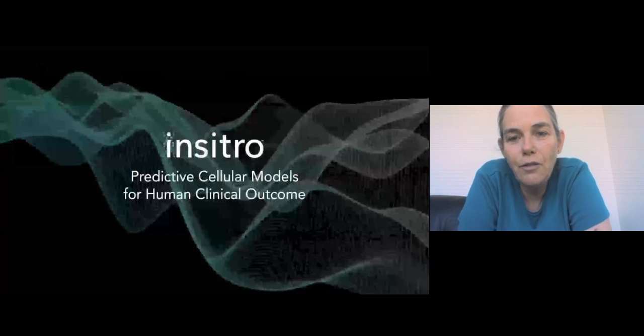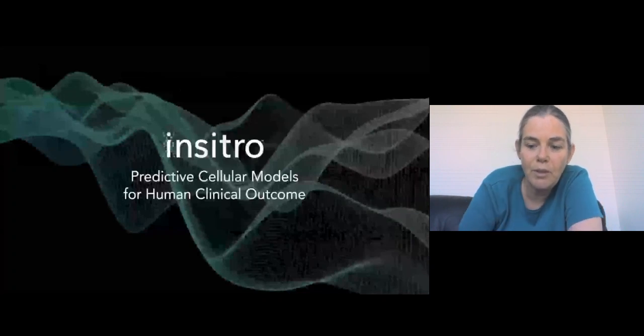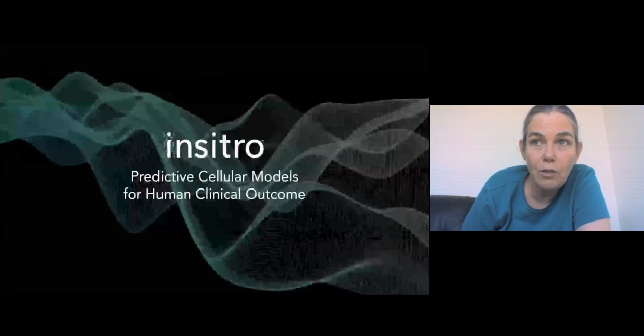So that was the first vignette. Now let's move on to the second, which is how do we then use our understanding of the genetic architecture to design better cellular models that are predictive of human clinical outcome. And those cellular models are critical for us in identifying and validating drug targets.